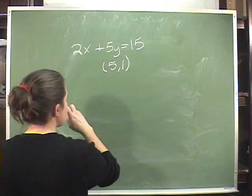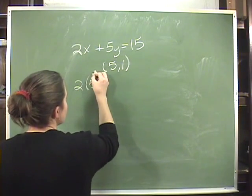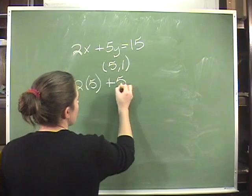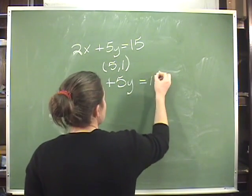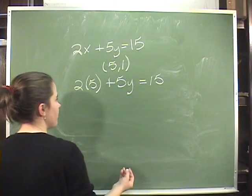It works like this. For this one, our x value is 5. So in the equation, wherever I see an x, I'm going to write a 5. So the equation becomes 2 times 5 plus 5y equals 15.